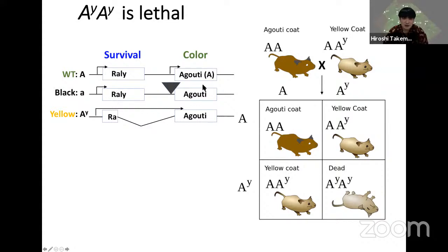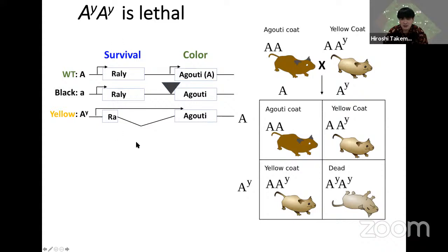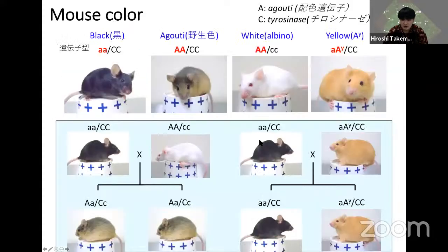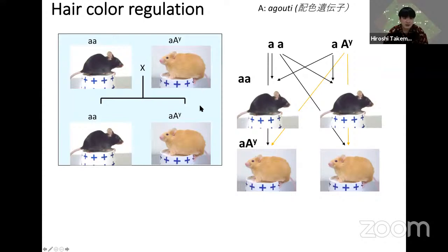At the agouti locus, melanin synthesis rate is determined by agouti protein expression. Wild-type has a normal gene structure with both agouti and the adjacent lulli gene. Black mice have a transposon in the agouti promoter that disrupts agouti expression. In contrast, Ay has a large deletion in this region, making agouti protein level very high, but lulli gene is disrupted, so Ay mice cannot survive. Dogs also have an agouti locus. Wild-type dogs have agouti-patterned hair, and brown-haired (AY/AY) dogs can be maintained by mating.